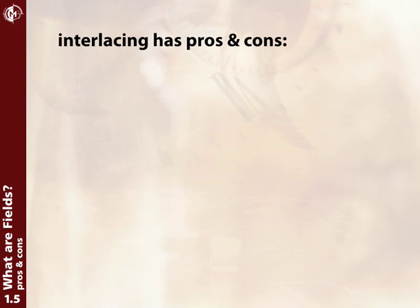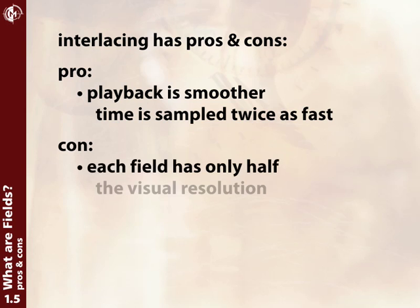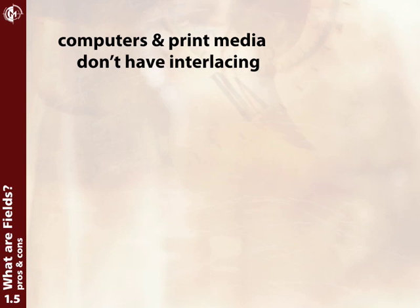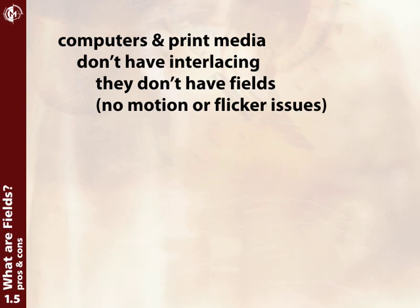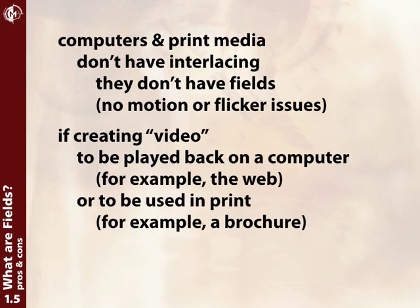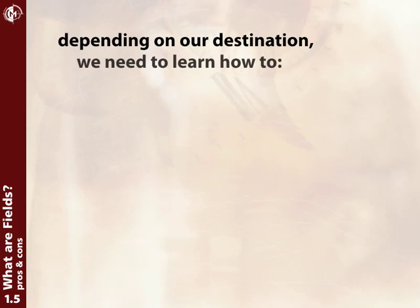This has a couple of side effects. The positive side effect is that playback has much smoother motion, because you are, in essence, sampling time twice as fast as normal. The downside is that each field — each point in time — only has half the resolution of the whole frame. Another very important concept is that computers and print media don't have interlacing — they don't have fields. So if we're trying to create video to be played back on a computer screen or as part of a print ad, we don't want to see interlacing. We want to find a way to get rid of those fields, so we need to talk about both preserving and also removing interlacing.